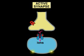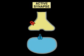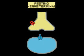The neurotransmitter is quickly removed from the synaptic cleft, either by enzymes that destroy it, or by reuptake into the nerve terminals or neighboring cells.